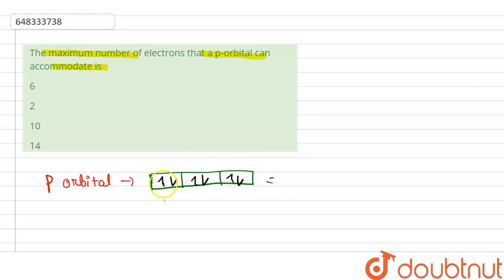Or you can see by this also. Here l value is one, so total number of electrons will be two times two l plus one. So two times two plus one is equal to three, so total number of electrons is six.